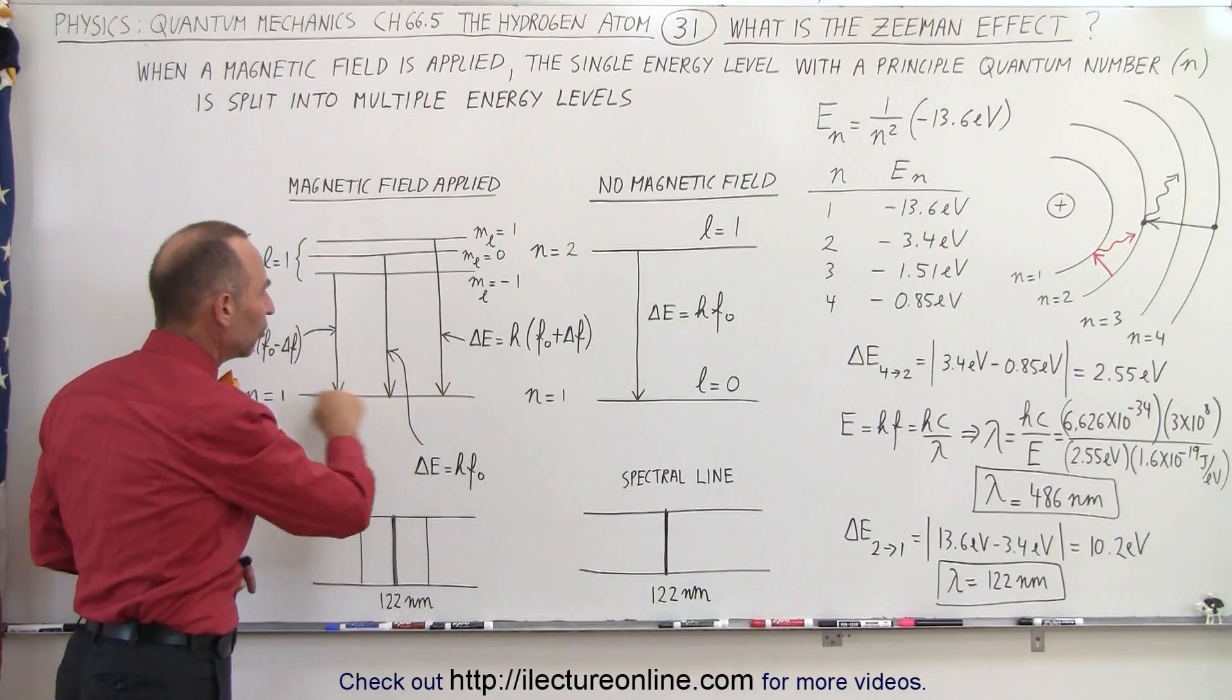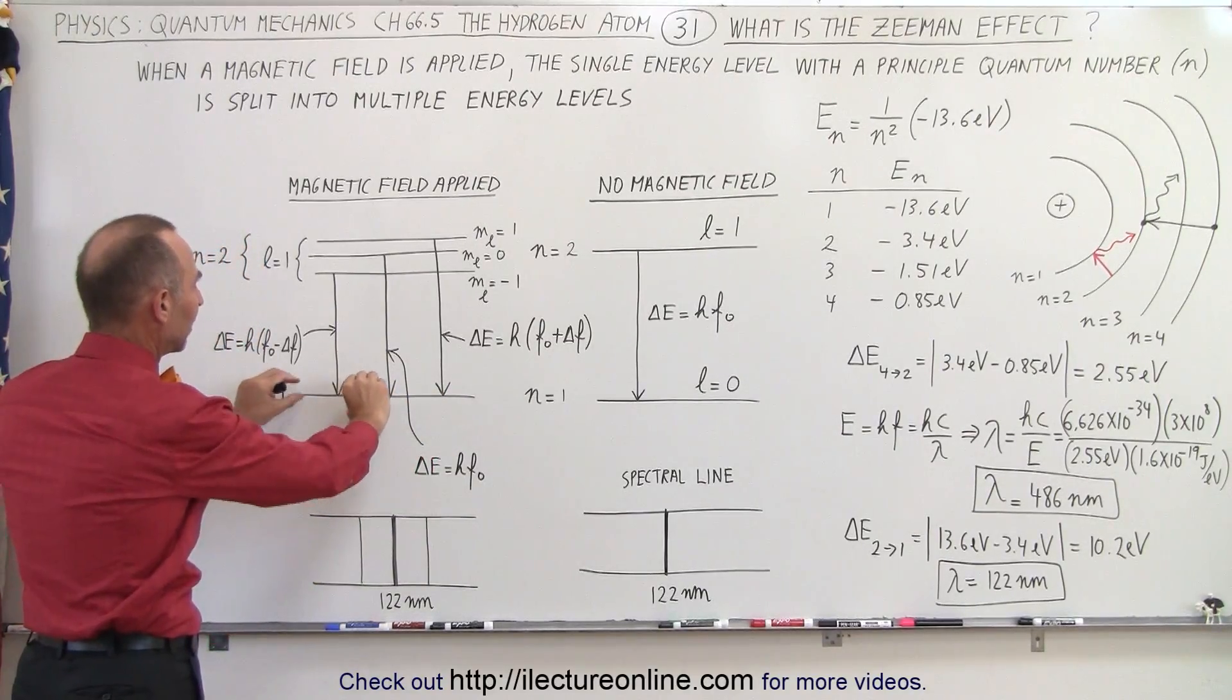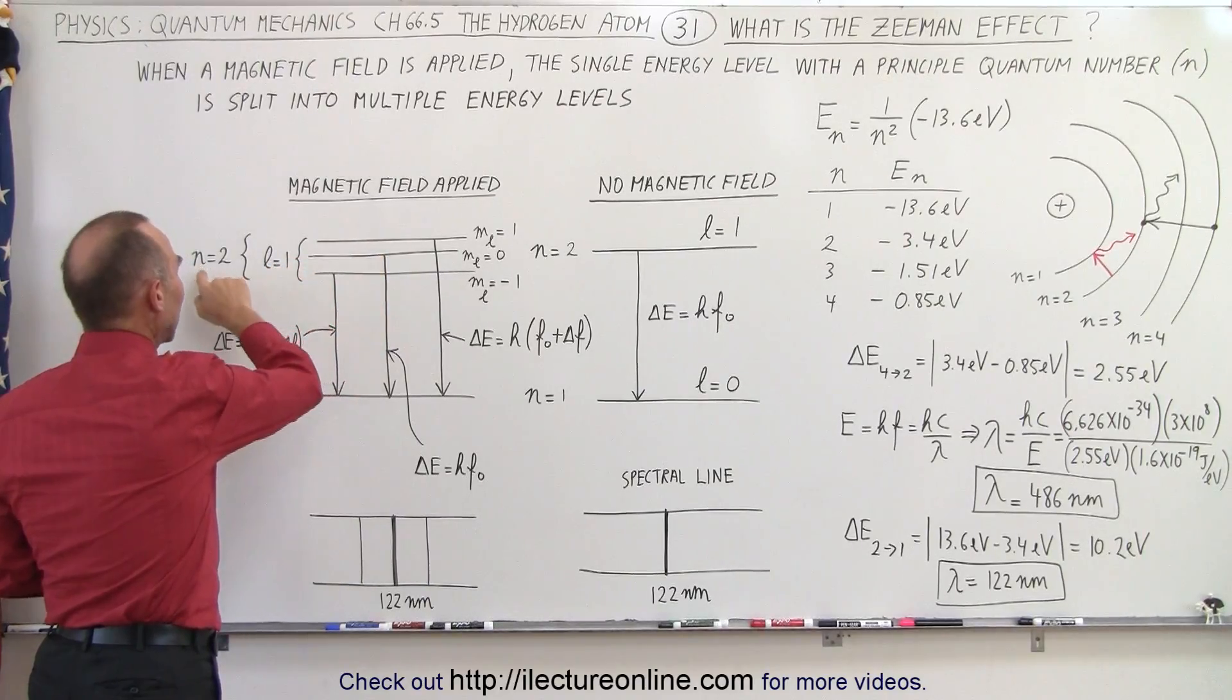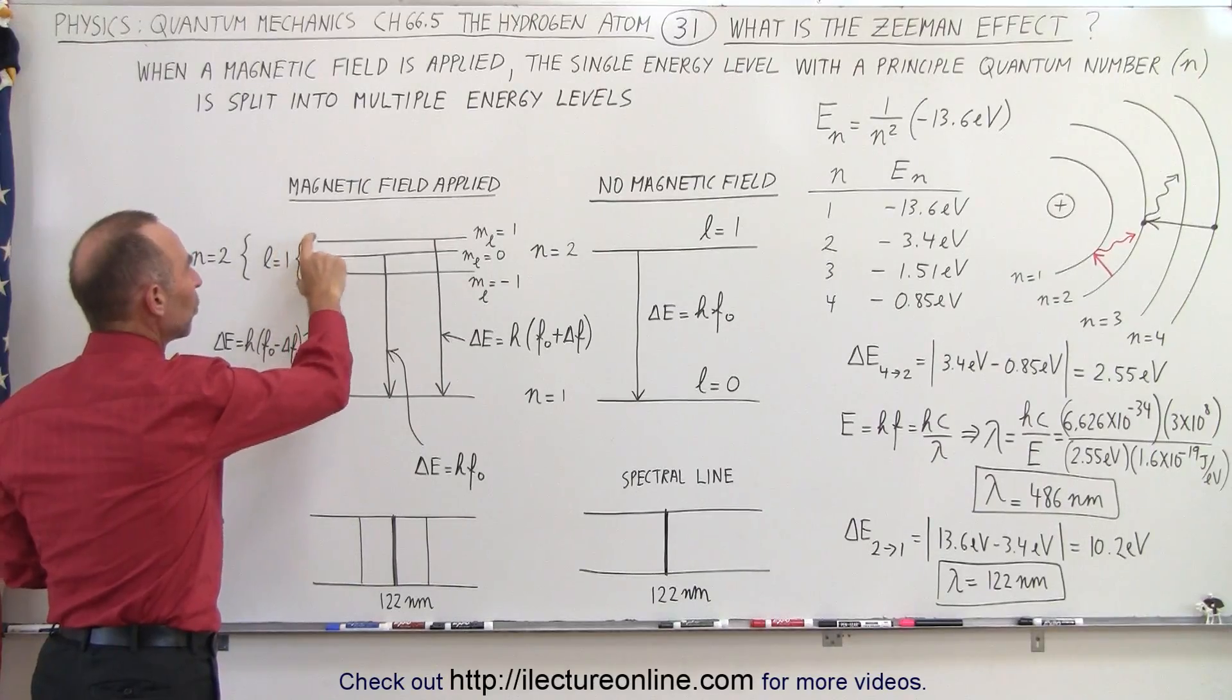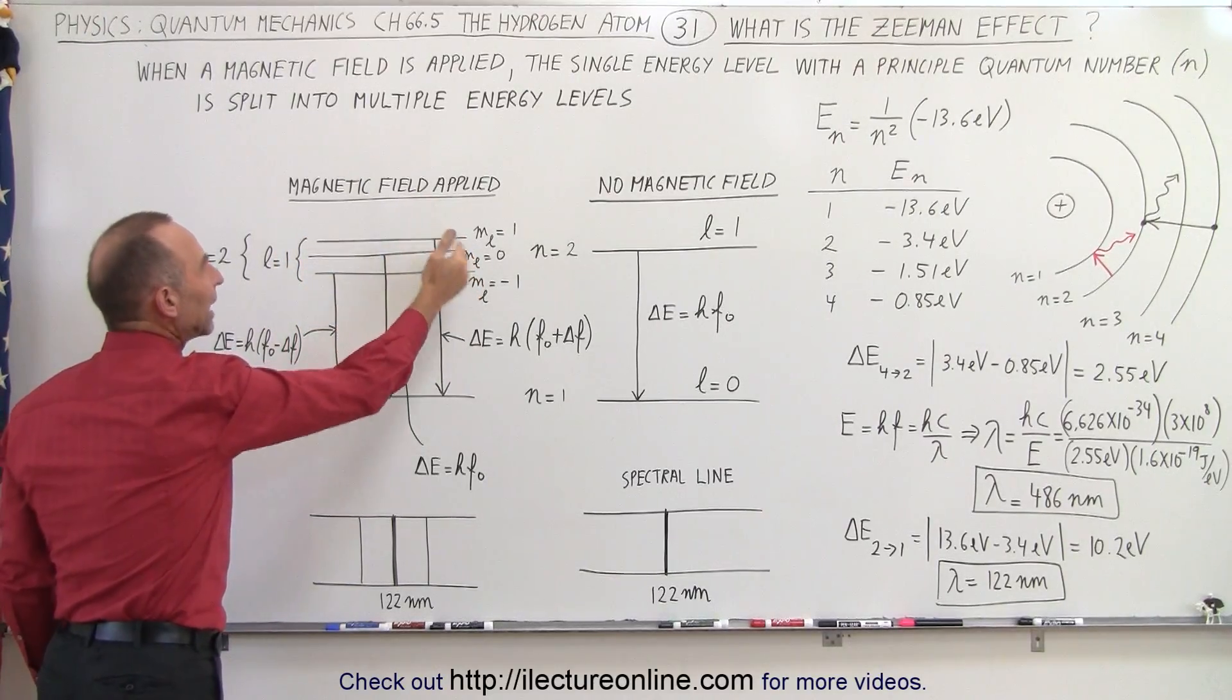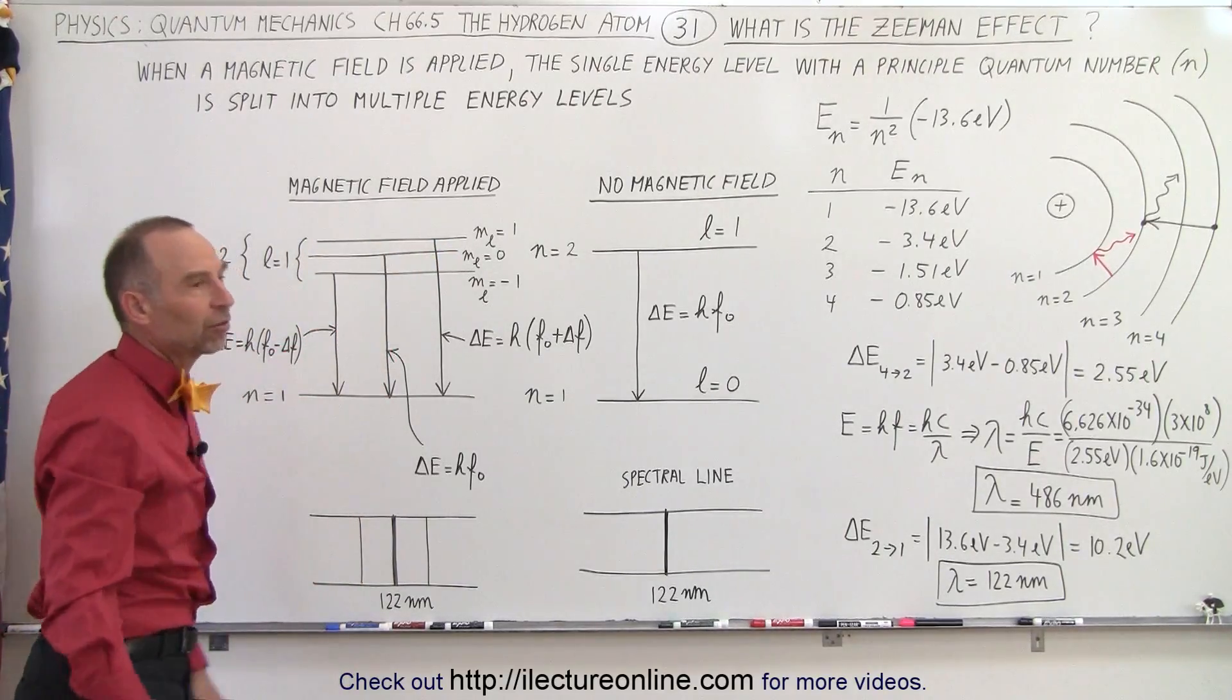Now, when n equals 1, there's only one specific angular momentum direction we can have, so this would not split up. But for L equals 1, or the n equals 2 level, where L equals 1, the orbital quantum number equals 1, there will be three different orbital magnetic quantum numbers associated with the three different levels that the electrons can be in.